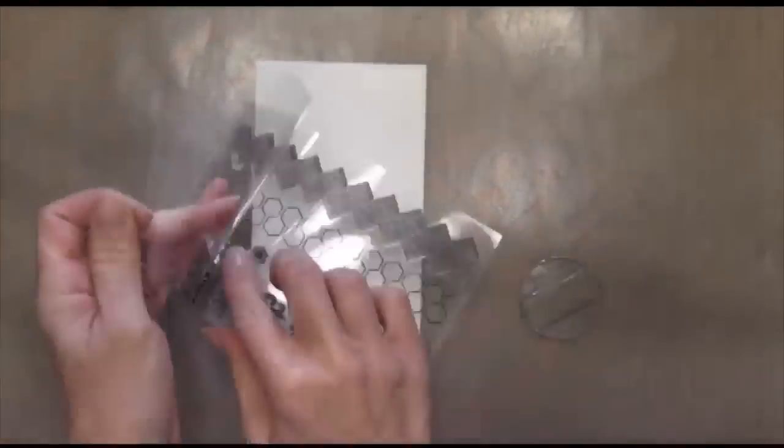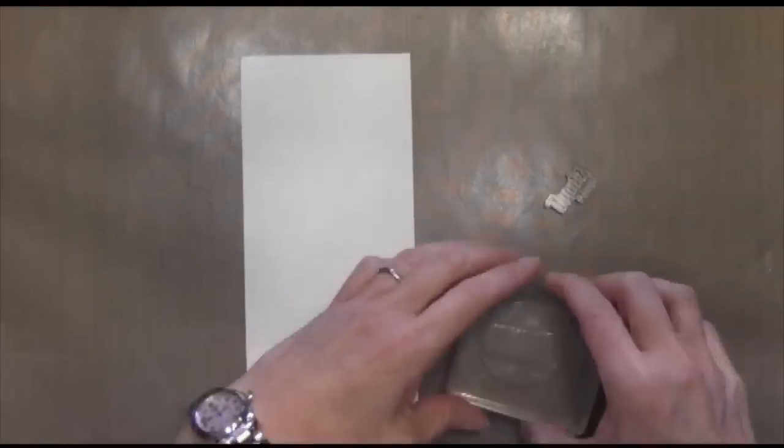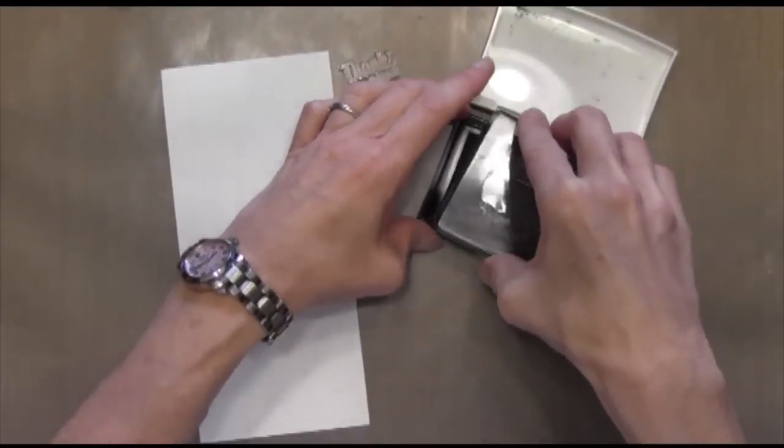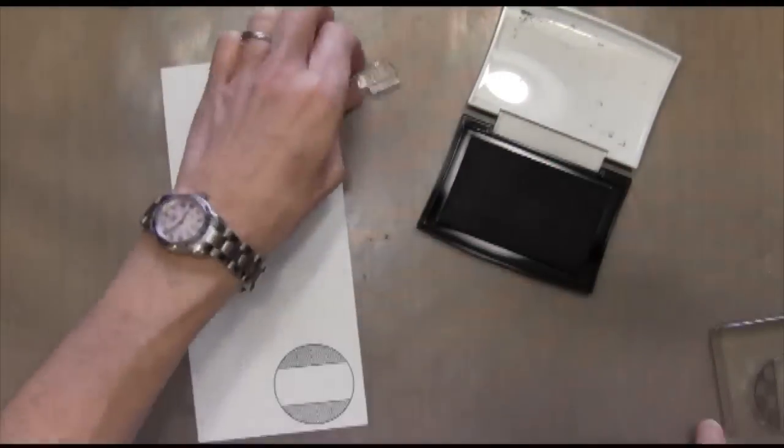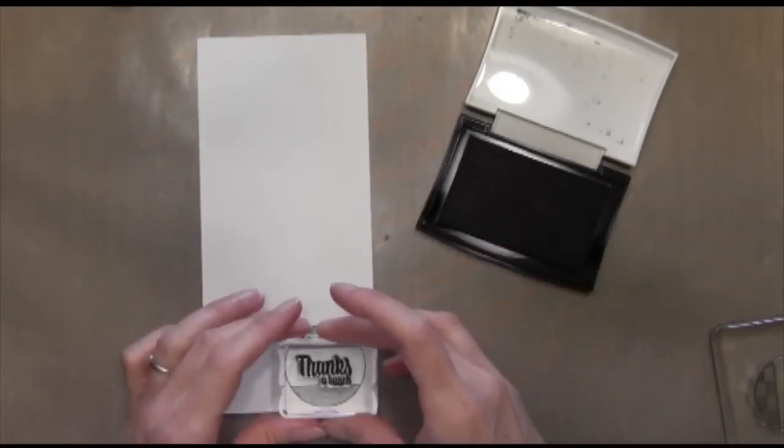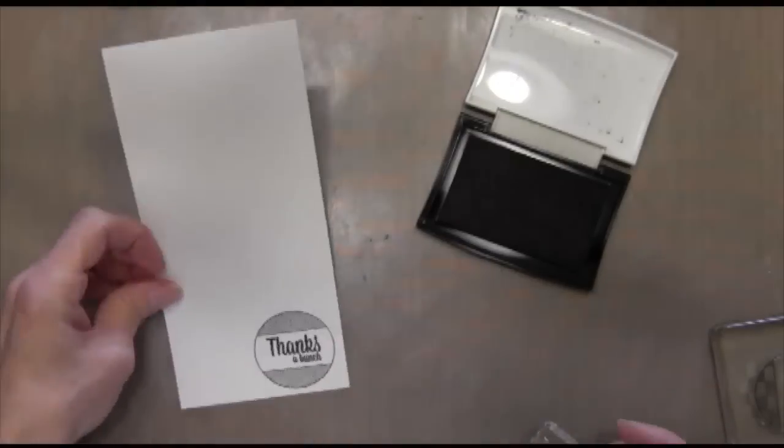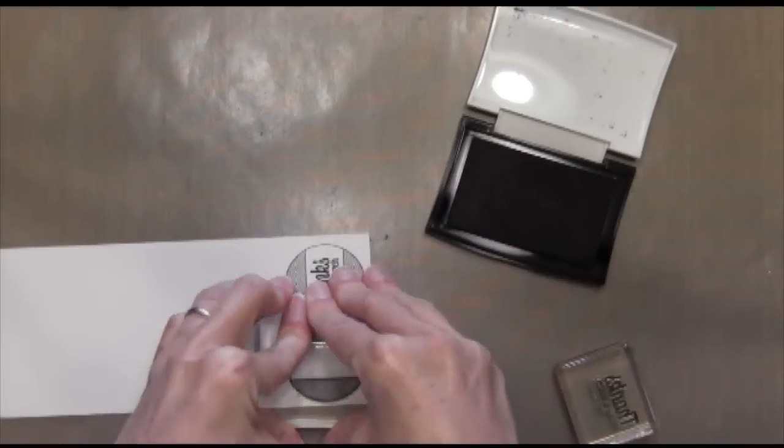Next I'm going to work on the sentiment. I'm using the circle and the sentiment from the same set. All the sentiments on the set fit inside this little circle. I'm going to stamp it and then put the sentiment inside. Actually I didn't like the way it came out so I'm going to re-stamp it.